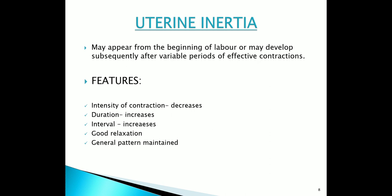First, we will discuss uterine inertia. Uterine inertia is the commonest type of disordered uterine contraction, but is comparatively less serious. It may appear from the beginning of labor or may develop subsequently after a variable period of effective contraction. Features of uterine contraction in uterine inertia: intensity of contraction decreases, duration increases, interval rate increases, good relaxation between contractions, and general pattern is maintained.